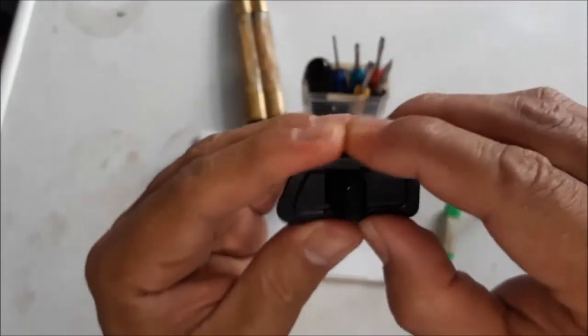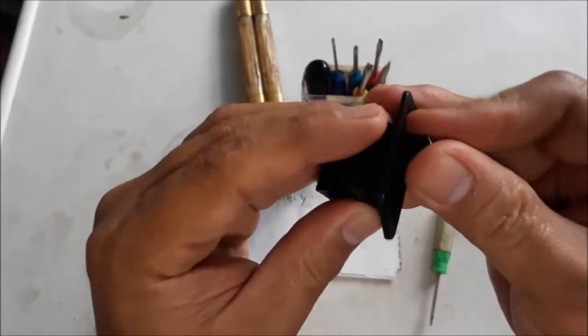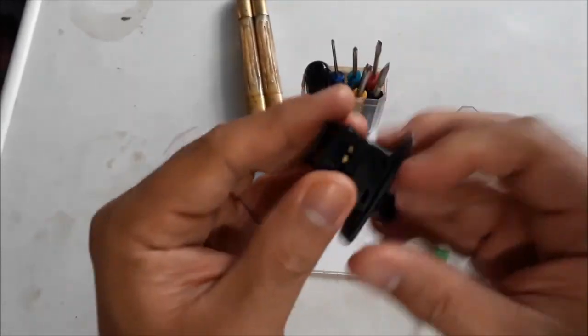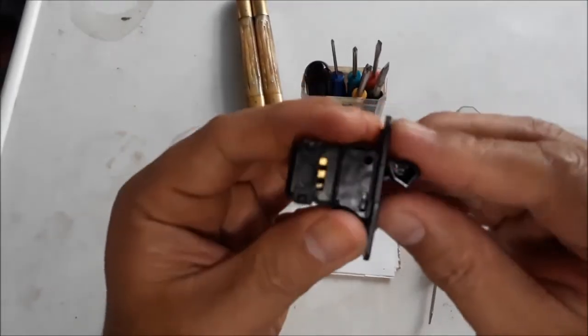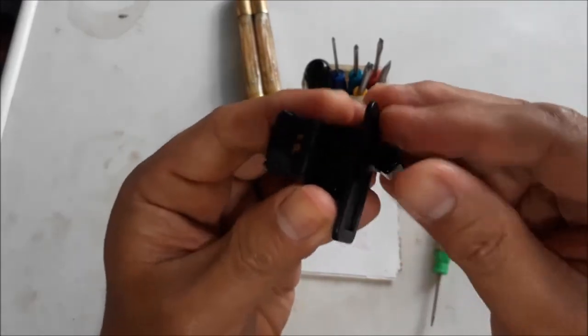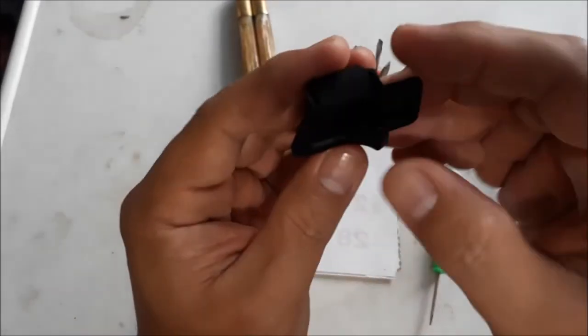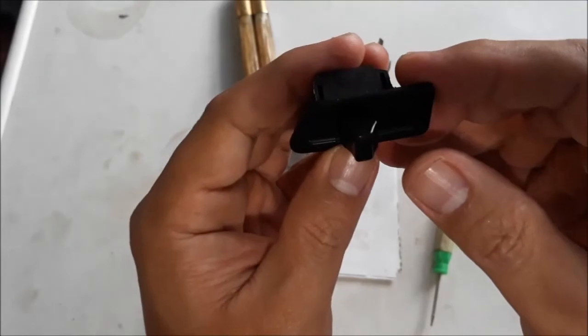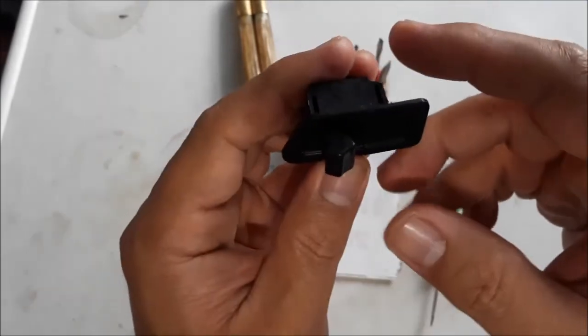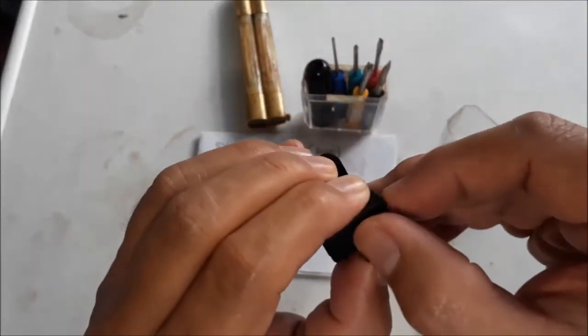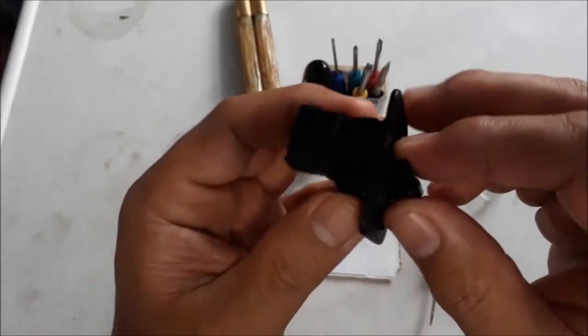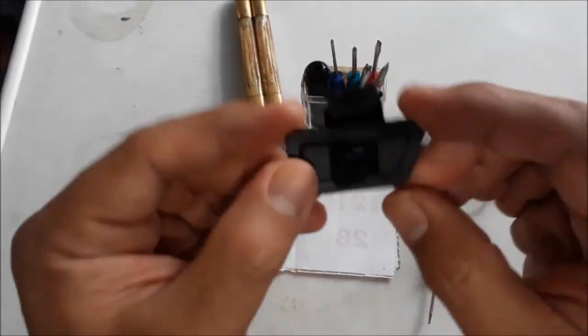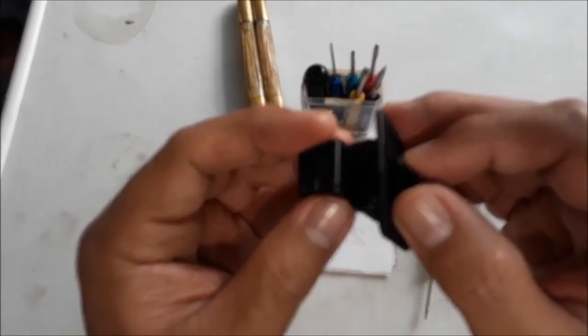There you go, you've got it all back. Function check. There has to be positive clicks on all three positions. This is off, this is park light, and this is headlight. There you go. It's very simple and I hope this video helps somebody. Bye!